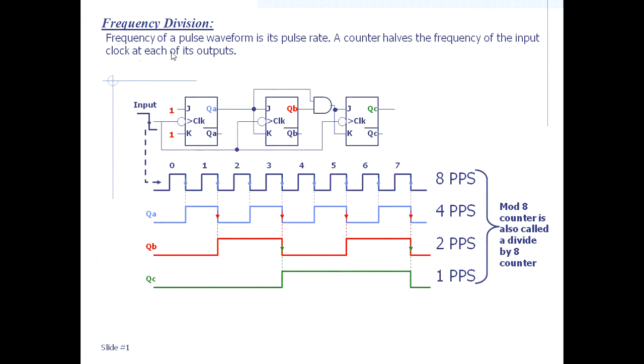Whatever frequency is coming, the counter halves it at every output. What does that mean? Consider this is a mod-8 counter: this is one flip-flop, second flip-flop, third flip-flop.